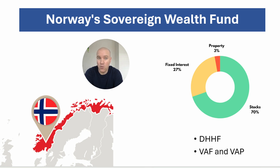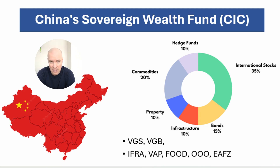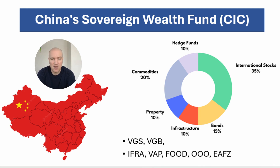The success of the Norwegian fund hasn't come just from what it's invested in, but from the significant contributions made to it over recent years. You can build your own Norwegian sovereign wealth fund through DHHF, VAF, and VAP here on the ASX. China's sovereign wealth fund is called the China Investment Corporation, responsible for managing part of China's foreign exchange reserves. It invests in stocks, bonds, and some real estate, though it's not completely transparent. We know 35% is in international stocks with a proportion in bonds, and nearly half is in hedge funds, commodities, property, and infrastructure. You can replicate that with five to seven ETFs here in Australia, with the majority allocation going towards international stocks.